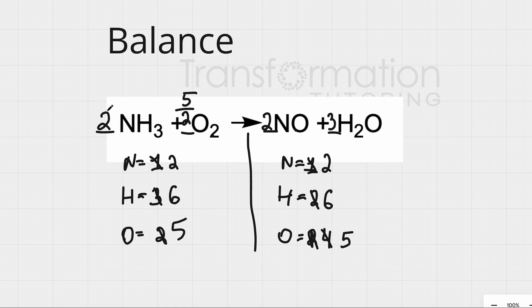Some teachers and professors will allow a fraction. However, if you want to get rid of it, what you need to do is simply multiply everything by 2. And that will get rid of your fraction. So what are my new numbers? 2 times 2, my new coefficient for NH3 will be 4. 5 over 2 times 2 will give me 5. 2 times 2 will give me 4. And 2 times 3 will give me 6. So these are my new numbers without the fraction. My balanced equation will be 4NH3 plus 5O2 goes to 4NO plus 6H2O.